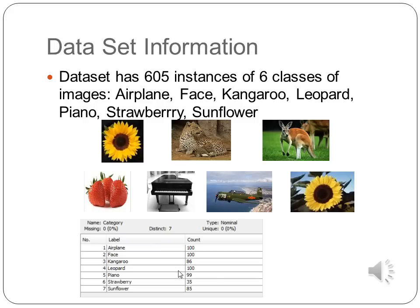The six image classes are: airplane, face, kangaroo, leopard, piano, strawberry, and sunflower. The table shows the instances — 100 instances of airplane, 100 of face, 86 of kangaroo, and so on.